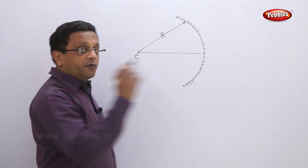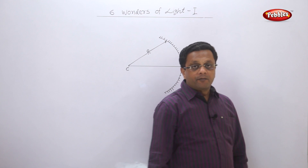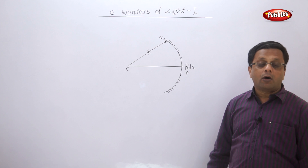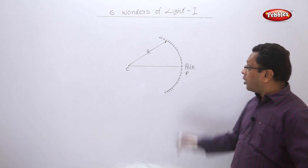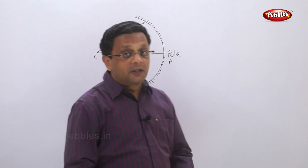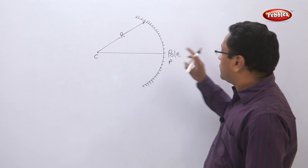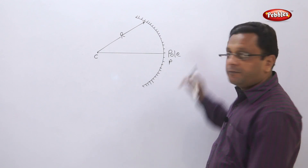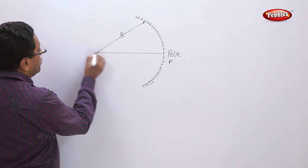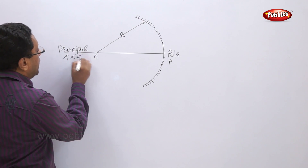There is one more term called P, or pole — the center point of the mirror itself, not the sphere. Now let us see what we mean by the principal axis. The principal axis is nothing but the line joining your center of curvature and your pole. This is a horizontal line, and it can be extended — it is called the principal axis.